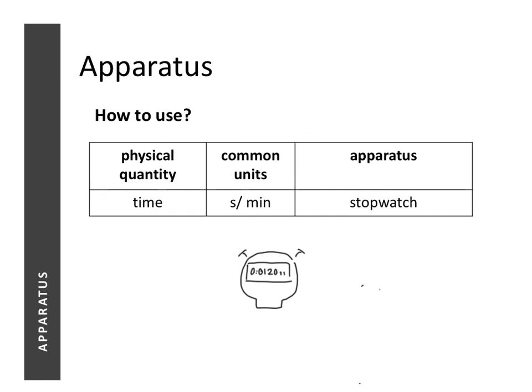To measure time, we use a stopwatch — the stopwatch shown has a timing of 1 minute and 20 seconds. In chemistry, we are not too concerned with milliseconds, so most timings we record are to the nearest second. This is because due to human reaction time, there's no way to measure accurately to the milliseconds level, so to correct for human error we round the timing to the nearest second.